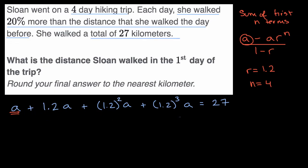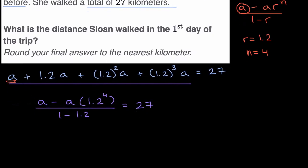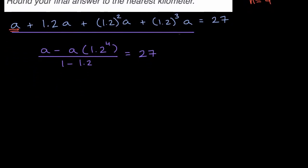And so, this left-hand side of our equation, we could rewrite as our first term, minus our first term times our common ratio, 1.2, to the fourth power. All of that over one minus our common ratio. And then that could be equal to 27. Let me scroll down a little bit, so we have some more space to then solve this.